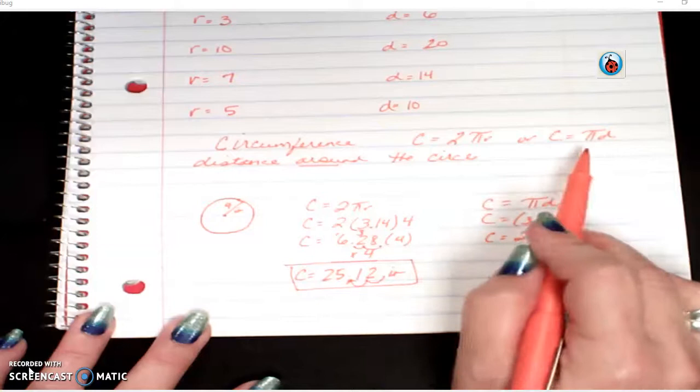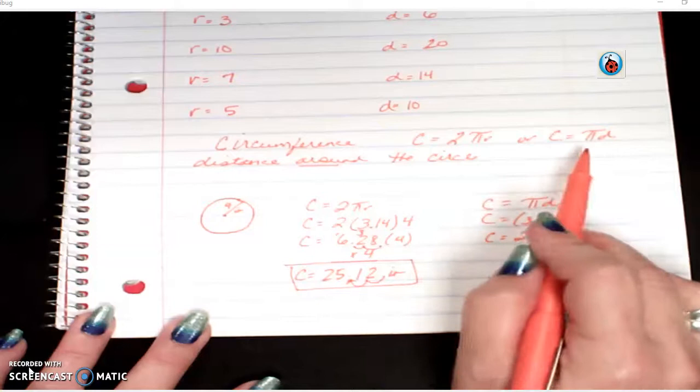I strongly suggest you use the formula based on whatever the question gives you. That way, you won't forget to calculate. Don't try to think this one's easier, it only has two steps. Well, it's not easier if you accidentally plug in the radius. Then you're going to miss it. Thank you.